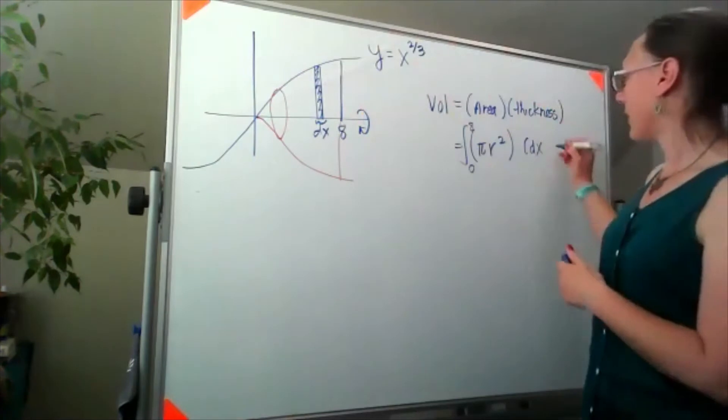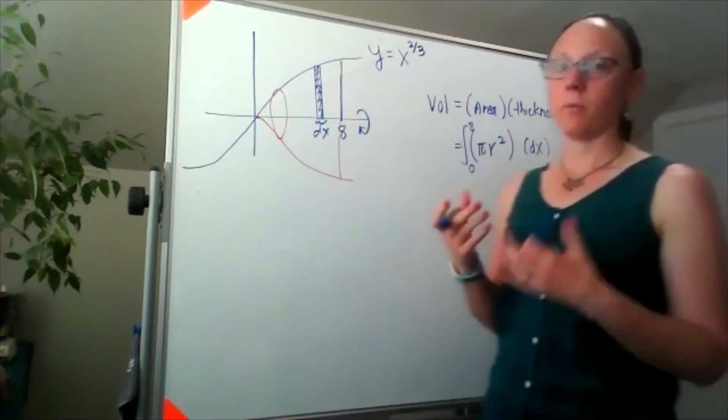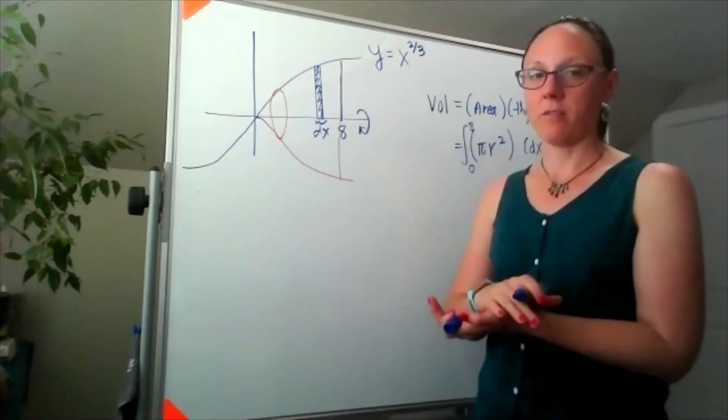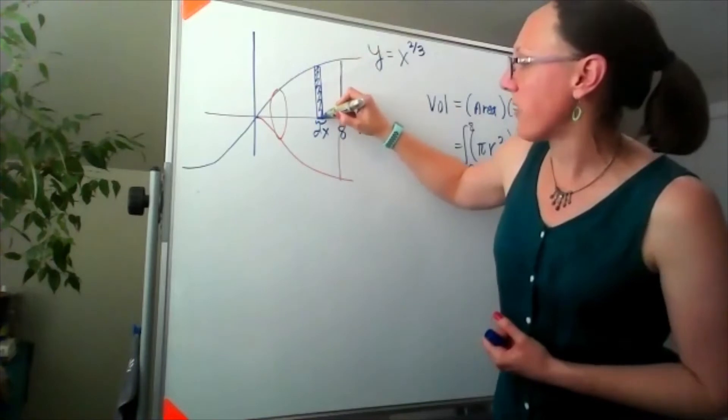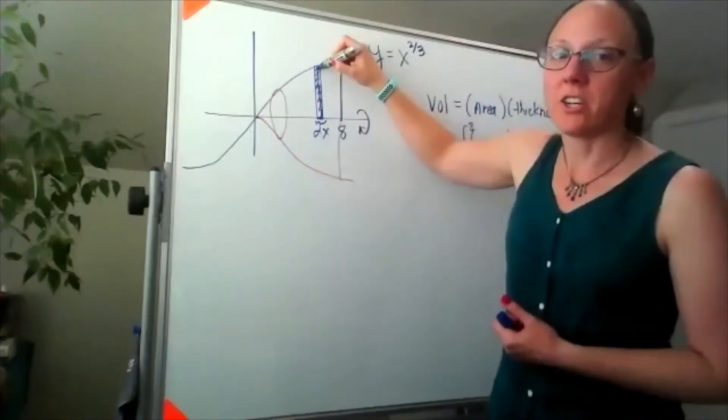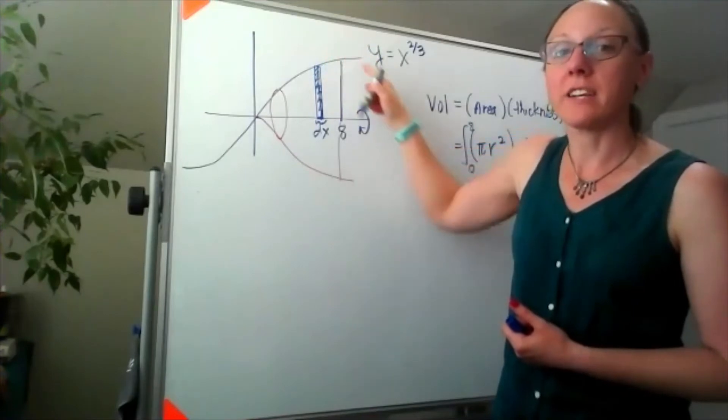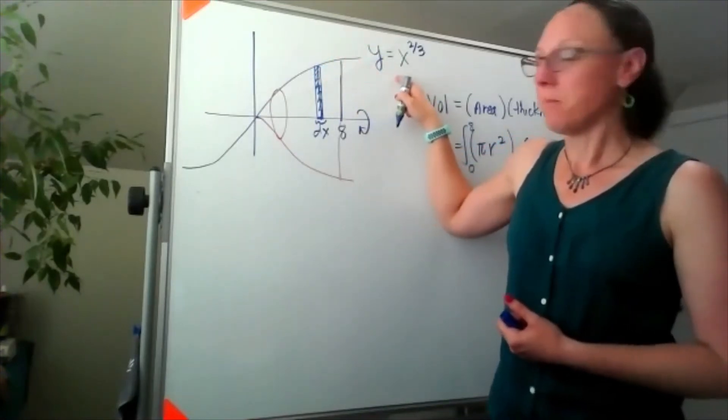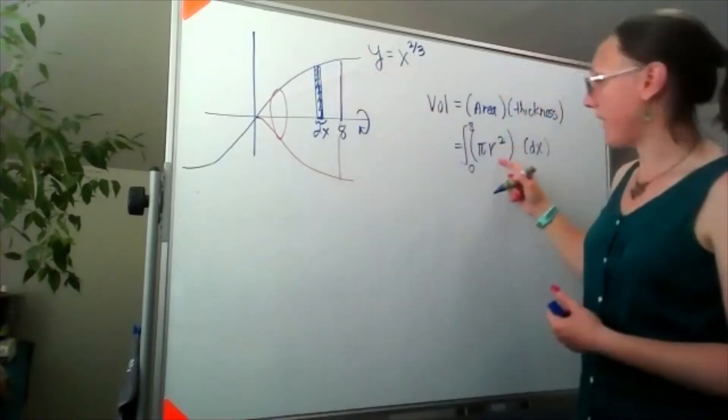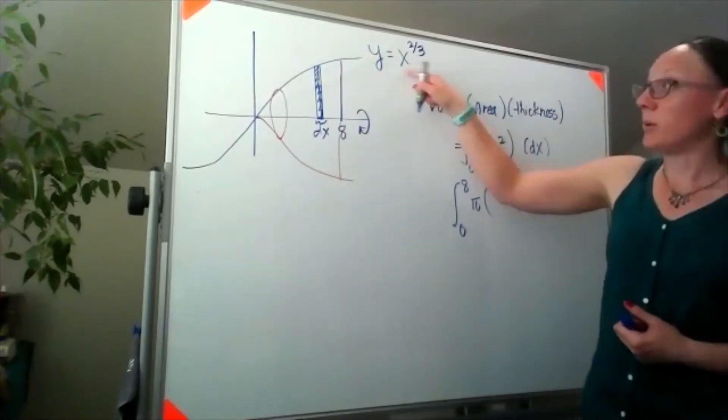Since what we need to figure out is an equation for our radius, my radius always starts in the center and goes till I hit an edge. If I start in the center and I go until I hit an edge, this distance is the y value.